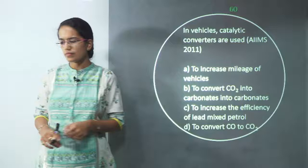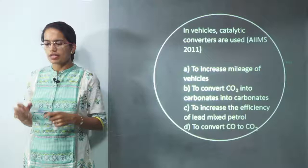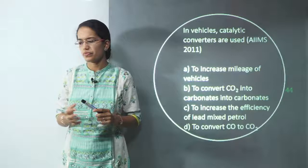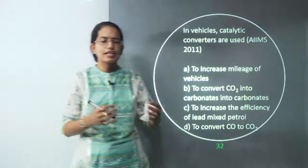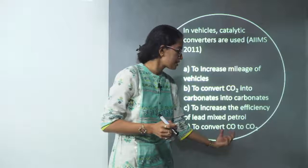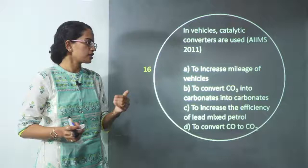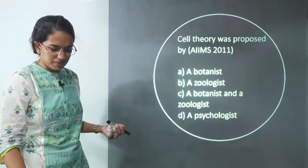The next question, related to environment, is about catalytic converters. Catalysis speeds up a process, but a catalytic converter converts toxic byproducts into less toxic forms. Carbon monoxide is highly toxic, and catalytic converters convert it into carbon dioxide, which is less harmful. So D is the correct answer, and that is the basic function of a catalytic converter.